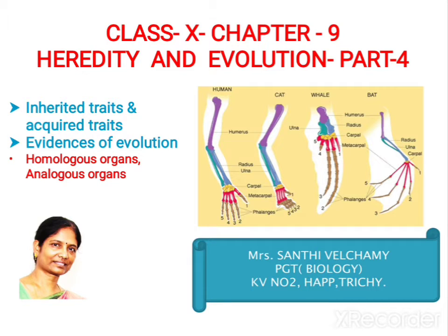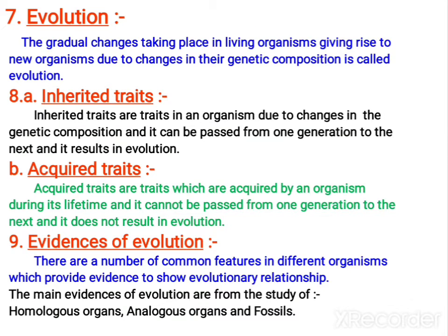Hello children, welcome to today's biology class. Today we are going to continue the chapter Heredity and Evolution. The topics to be covered are inherited traits and acquired traits, and among evidences of evolution, we are going to cover homologous organs and analogous organs. Now let us go inside the chapter.